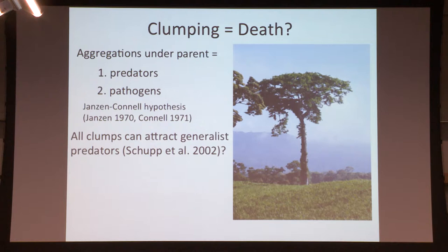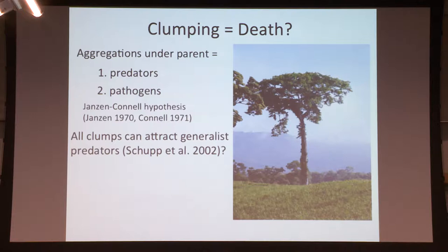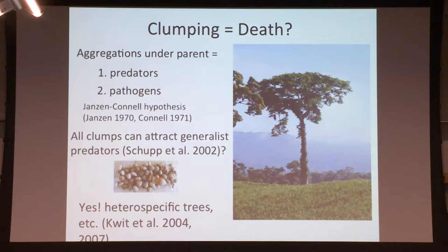This has also been extended to all clumps. Animals can create clumps through various behaviors such as roosting, nesting, or using latrines on a regular basis, or even just roosting at other trees. Aggregations of any seed may attract predators, particularly granivorous predators, and result in death. This has been shown in a couple different papers and modeled.